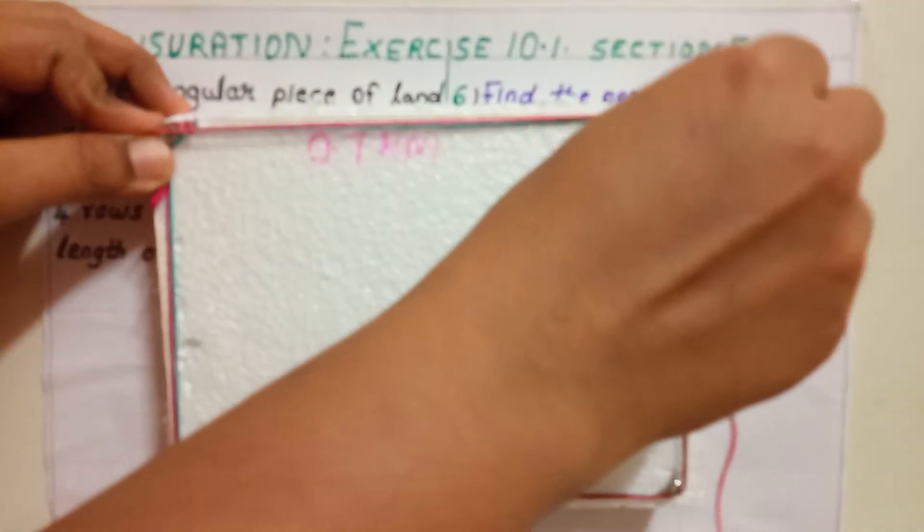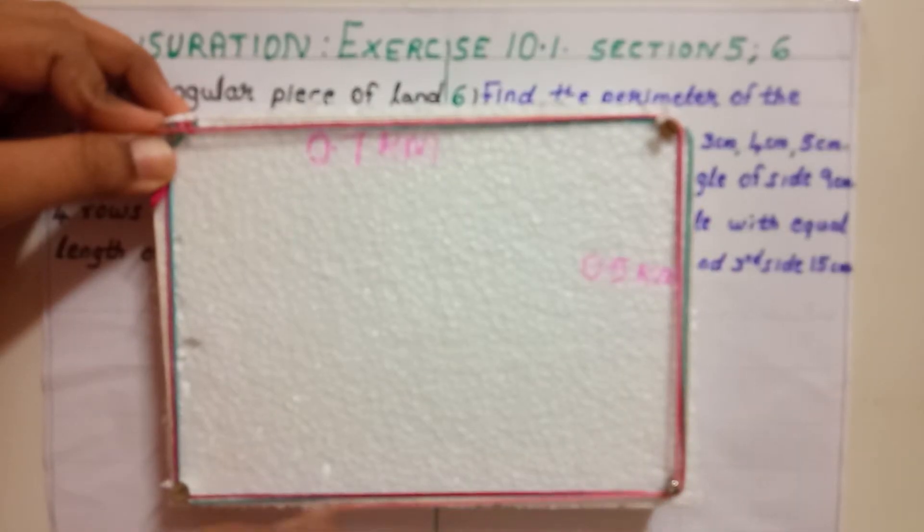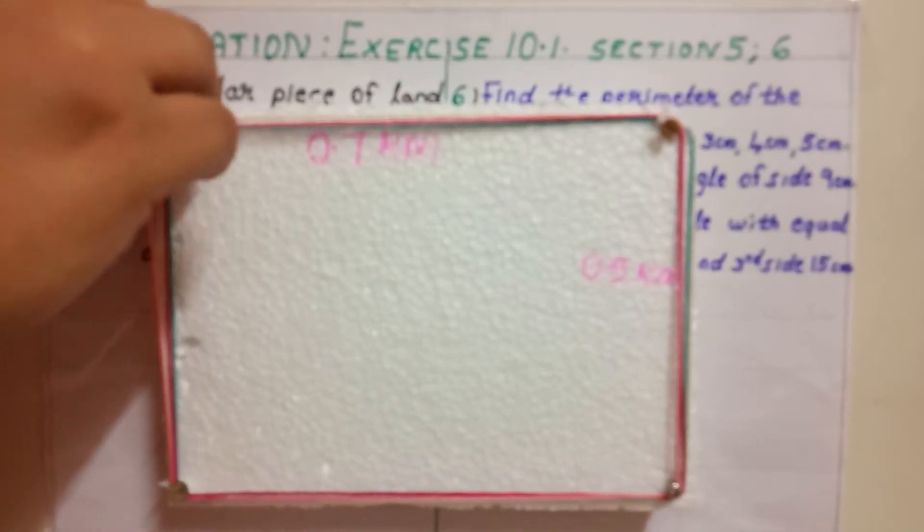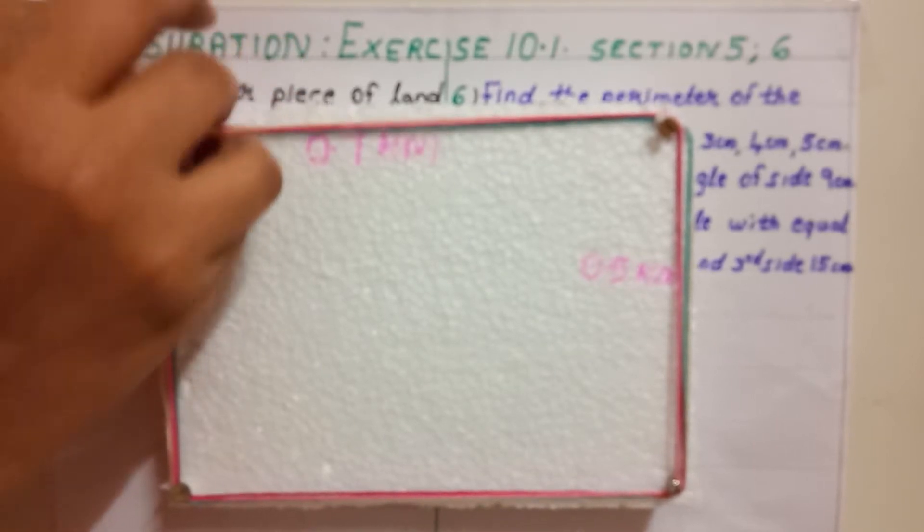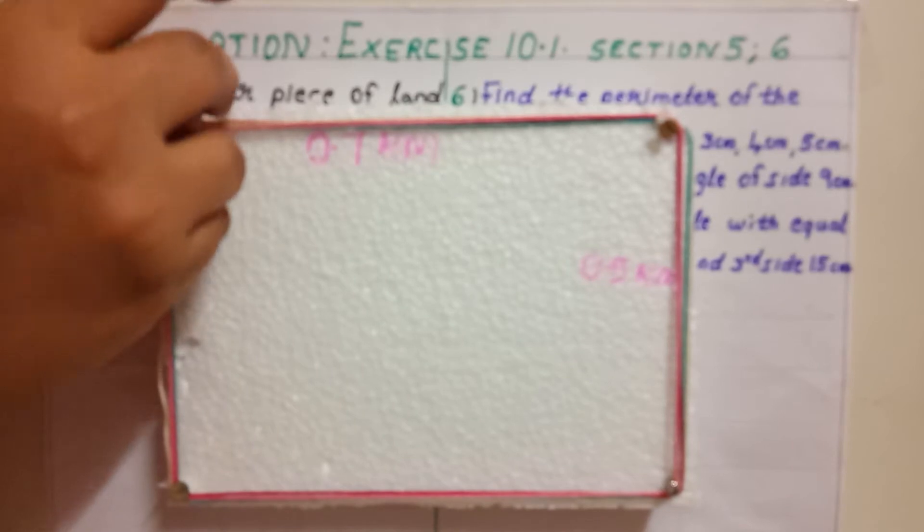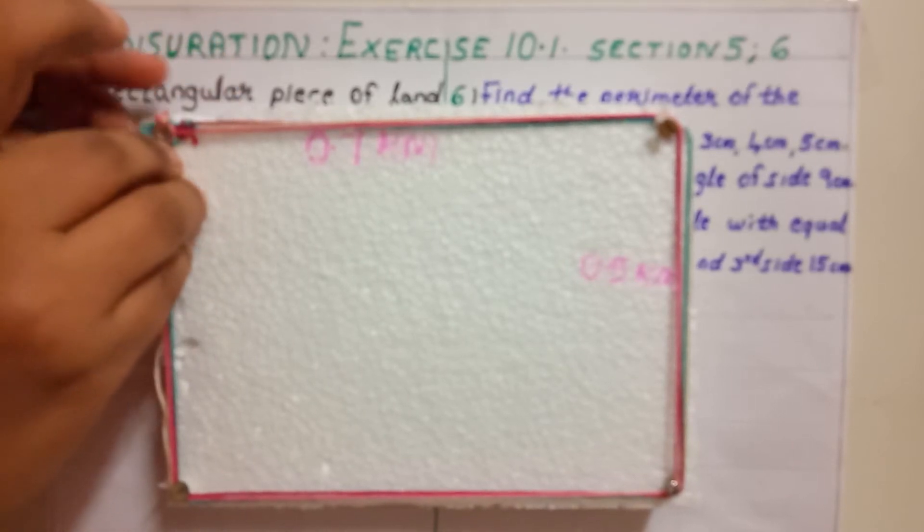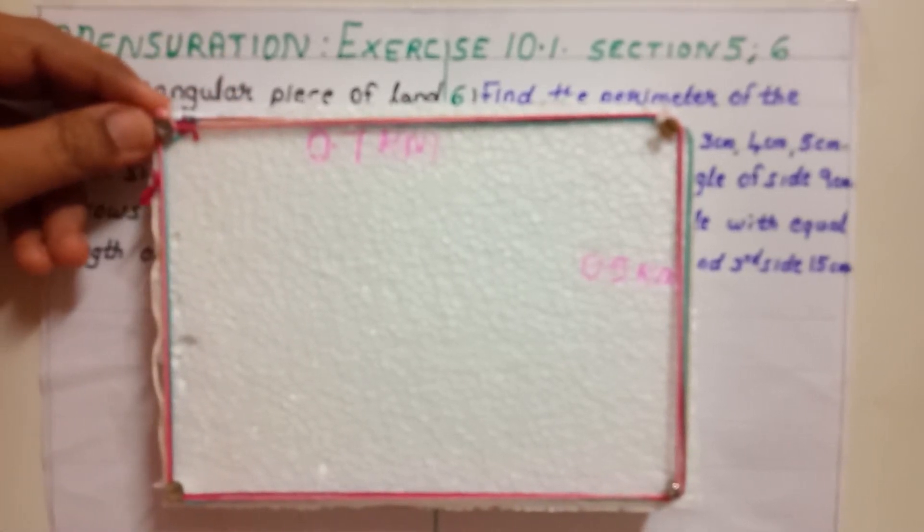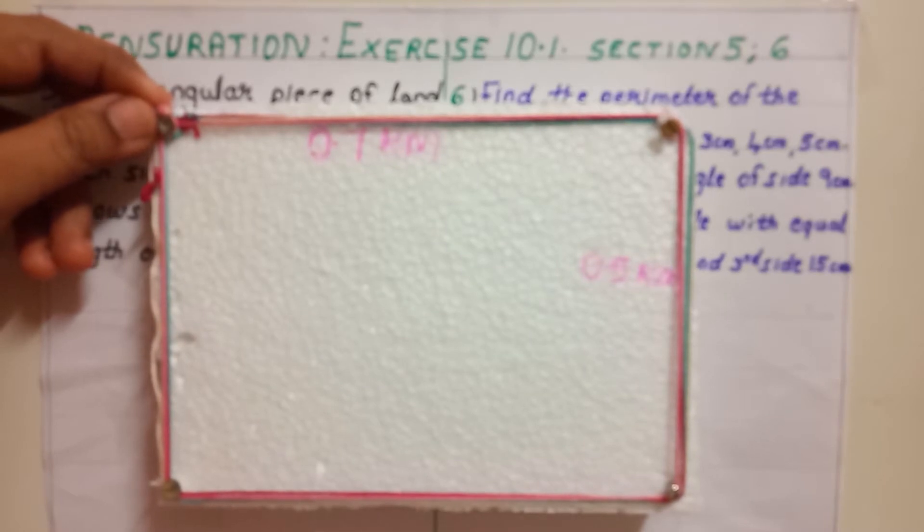Then, pink thread. Now, the fencing is done. So, after removing this thread, we will get the required answer.